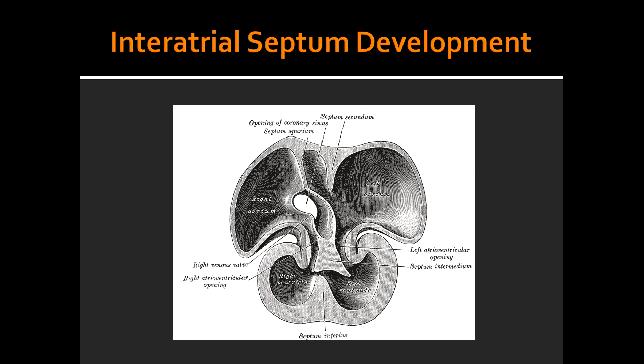What is happening on picture 1 of the interatrial septum development? In picture 1, you see foramen primum narrows as septum primum grows towards the endocardial cushion.